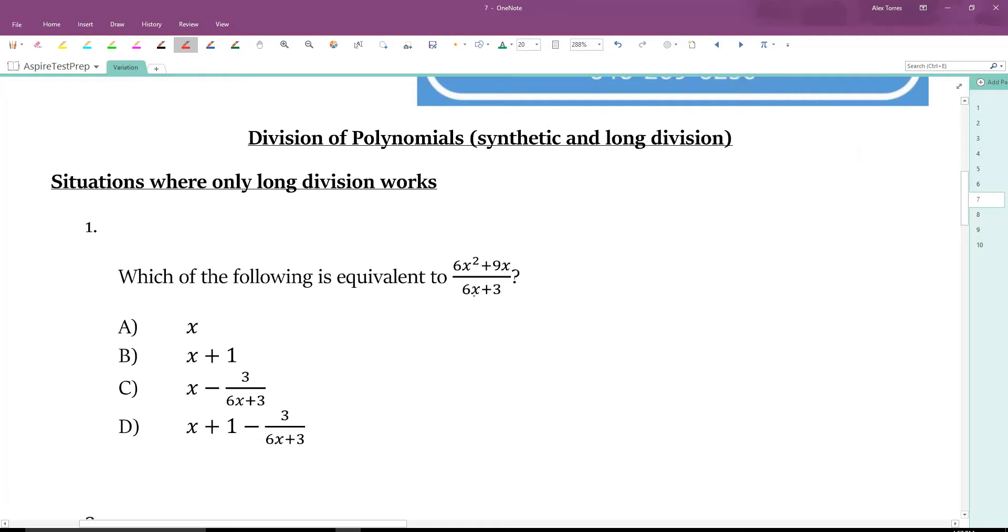Synthetic division says that we want to divide by the root. The root right here for 6x plus 3 would be found if we set it equal to 0 and solve for x. So 6x equals minus 3, we subtract 3, divide by 6, x equals negative 3 over 6, which is the same as negative 1 over 2. If we were to do synthetic division, we would have negative 1 half right here.